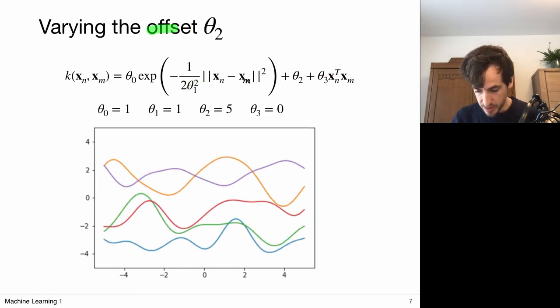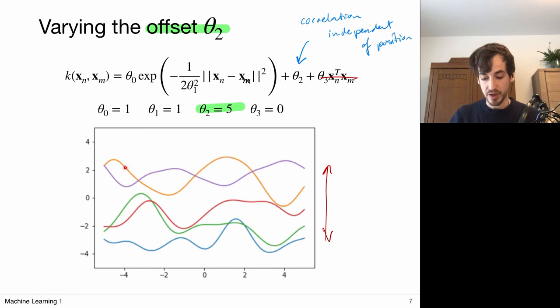Now let's look at this offset term theta two. I'm still turning off this particular linear part and making reasonable choices for theta zero and theta one. I call it an offset term because these functions vary a lot in their offset—this function is clearly higher than this particular sample function. This theta two induces a correlation which is independent of position. That means if one of my random variables is large, then all the other random variables should also be large, because independent of whatever the location or relative position, they are correlated.